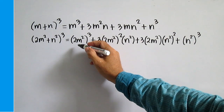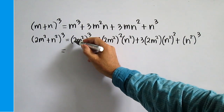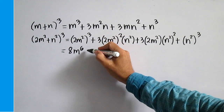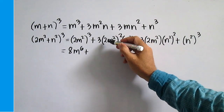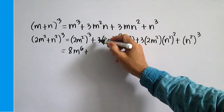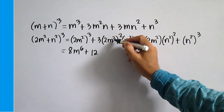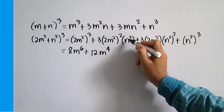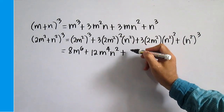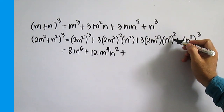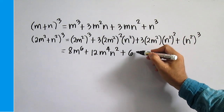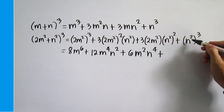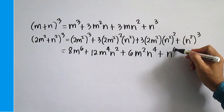Simplify. This is equal to 2 times 2 times 2 is 8, times 2 times 3 is 6, m to the power of 6, plus 2 times 2 is 4, times 3 is 12, m squared times m squared is m to the power of 4, n squared, plus n squared. The cube of n squared is n to the power of 4, 3 times 2 is 6, m squared, n to the power of 4, plus the cube of n squared which is n to the power of 6.